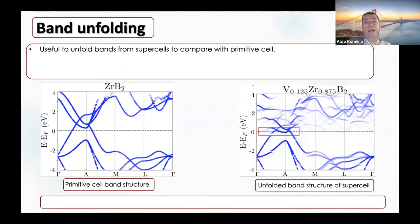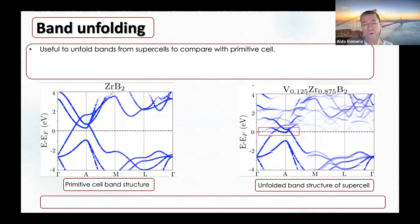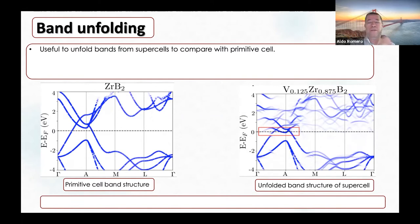We also have a band unfolding analysis that we have generalized. Now, besides obtaining the band unfolding itself, we can also see the atomic orbital and species contributions to the band unfolding—meaning you can see what the different contributions of different atoms are when comparing the primitive cell and supercell.